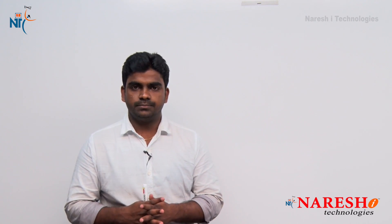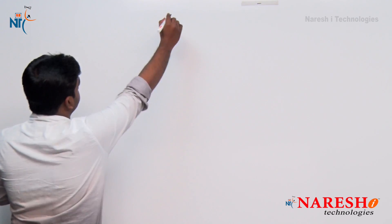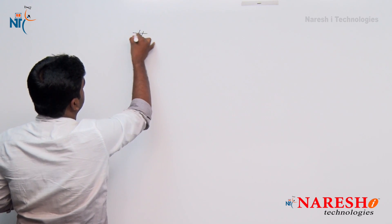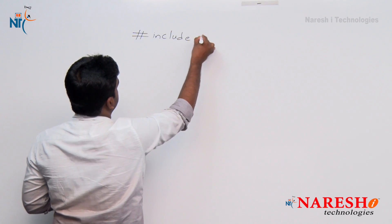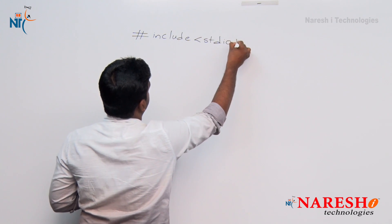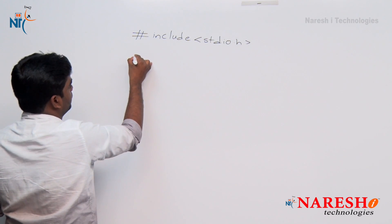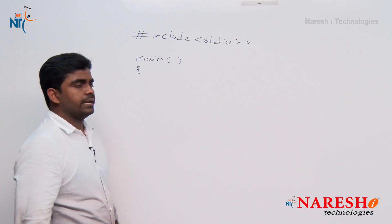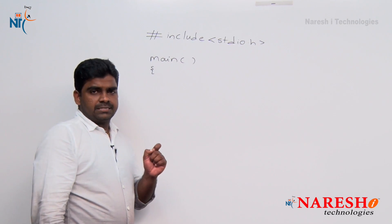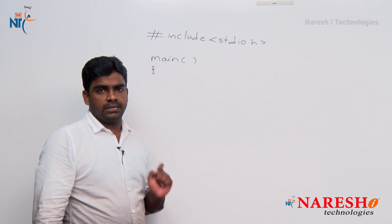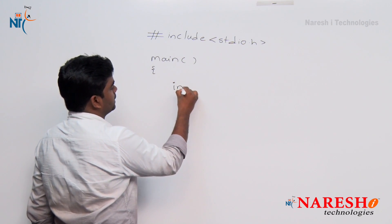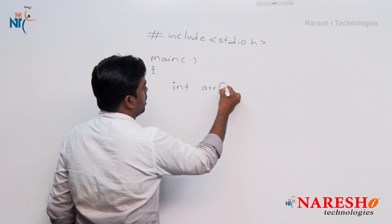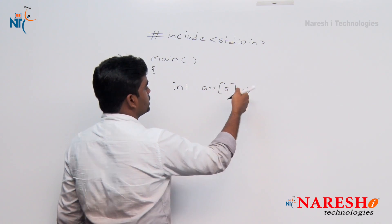In the first example, how to read and how to print array elements. Here, first we are writing the header file and then a main method. Inside the main method, I am declaring one array. Already we discussed arrays can be declared either locally or globally. Here the declaration is a local declaration — int arr of 5. I am not initializing with any value.